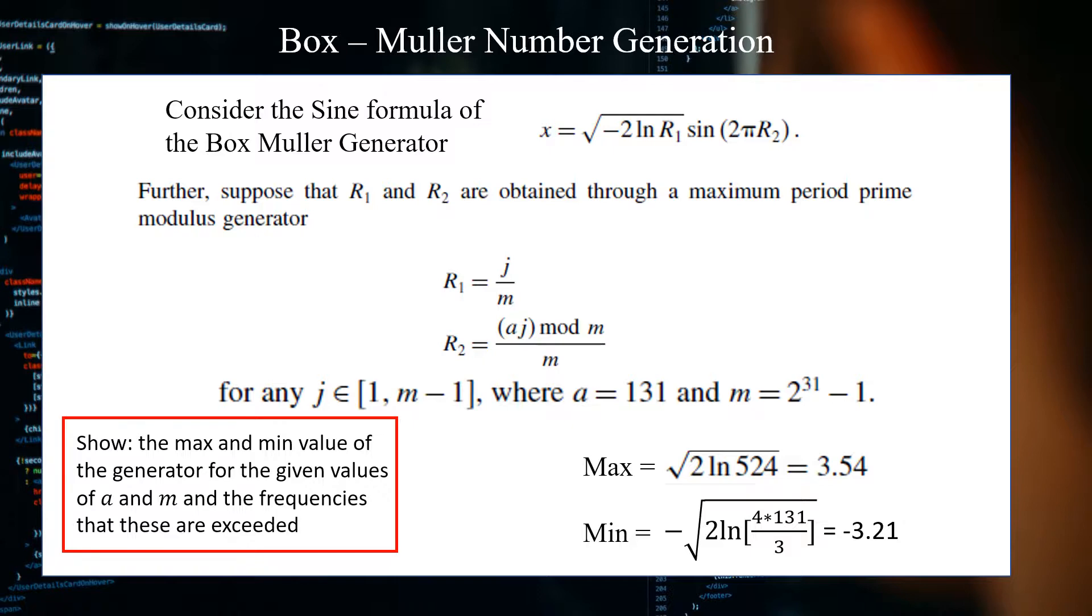The constraints are given as J is any number that falls within that interval from 1 to M minus 1, where A is 131 and M is 2 raised to the 31 minus 1.